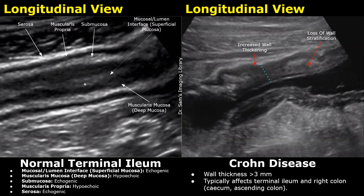Now we will compare the normal images of the bowel with bowel affected by Crohn's disease. This is the normal terminal ileum in the longitudinal plane. We can see five distinct layers. The innermost layer is echogenic and called the superficial mucosa, also called the mucosal and lumen interface. The second layer is hypoechoic and called the deep mucosa or muscularis mucosa. The third layer is the echogenic submucosa. The fourth layer is hypoechoic and called the muscularis propria. The final layer is the outermost echogenic serosa.